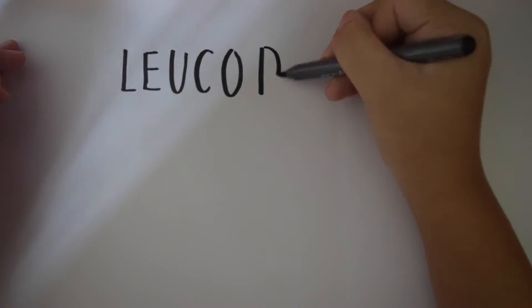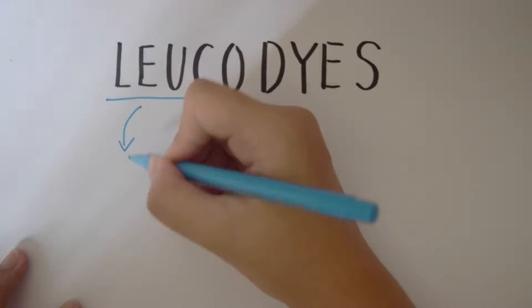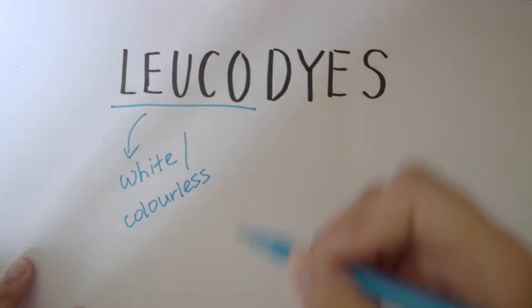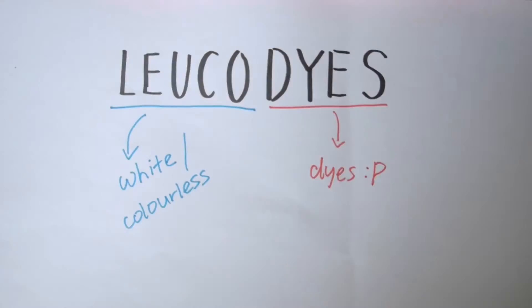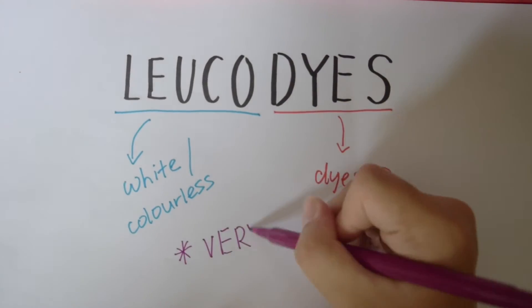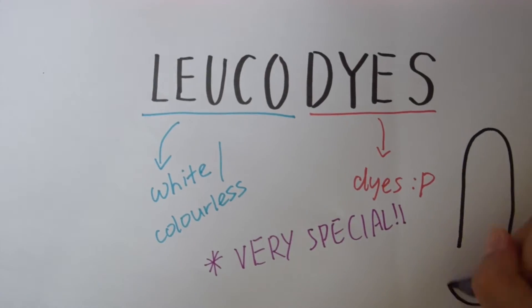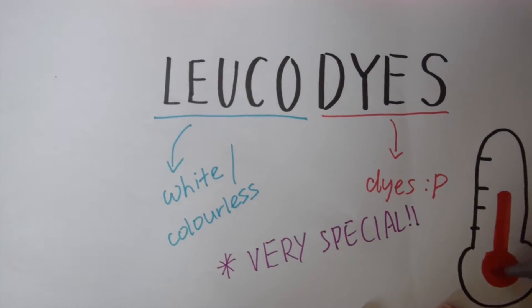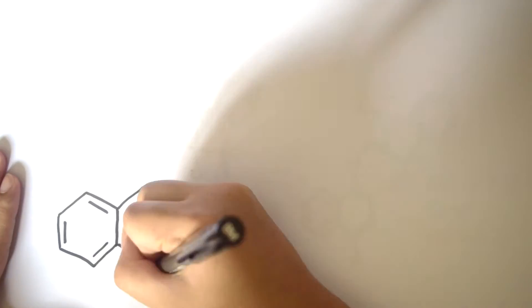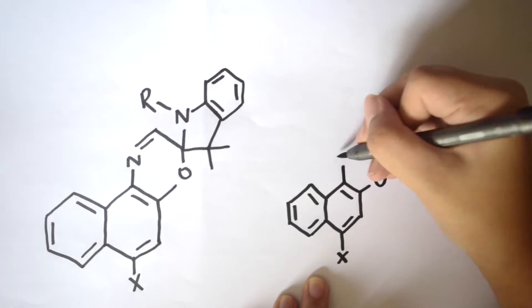So the first type of thermochromic smart materials are the leuco dyes. As the name suggests, leuco means white or colourless, and dyes are simply dyes. But remember that these are not just any kind of dyes. They are special dyes that are highly sensitive to temperature and heat changes around us. Leuco dyes are organic carbon-based chemicals, just like what you see here.